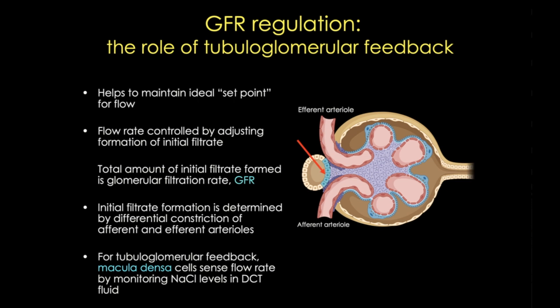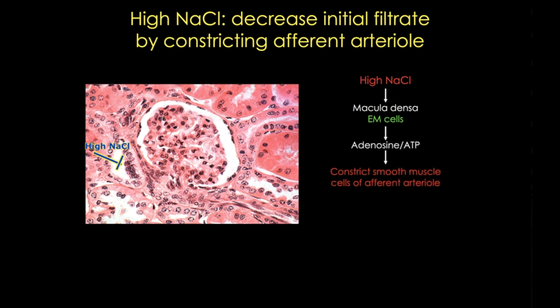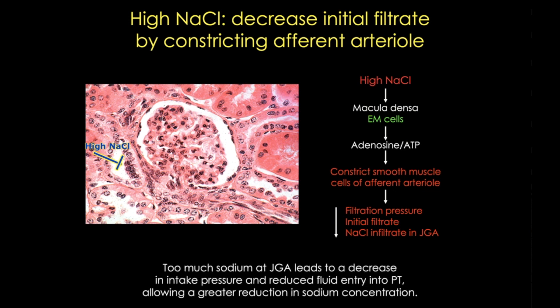While a full discussion of tubuloglomerular feedback is beyond the scope of this tutorial, let's briefly consider what happens when the distal tubule fluid contains too much sodium chloride. When sodium chloride levels are high, the cells of the macula densa detect this and signal to the smooth muscle cells of the afferent arteriole. The afferent arteriole then constricts, decreasing filtration pressure on the glomerulus, which decreases the initial filtrate and eventually causes sodium chloride levels to lower. What happens when sodium chloride levels are too low is much more complicated and won't be covered here.